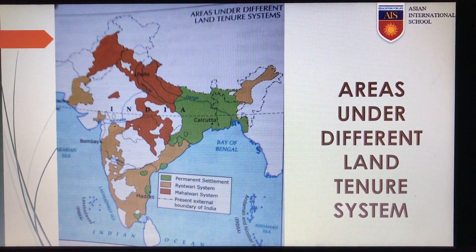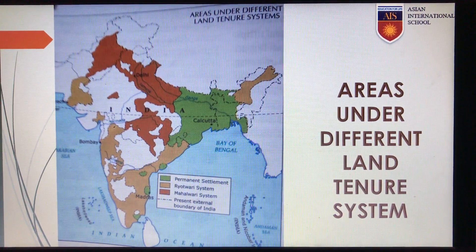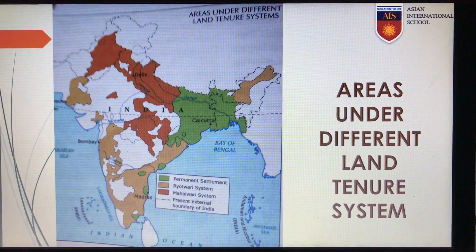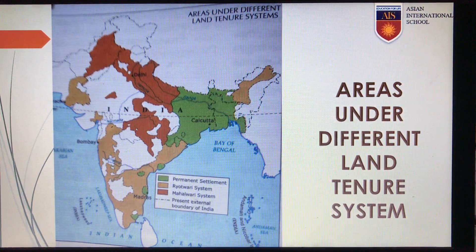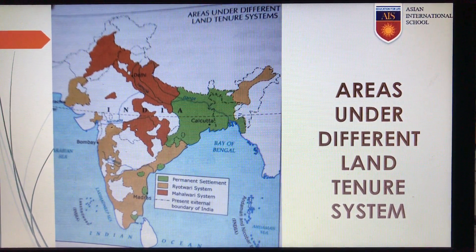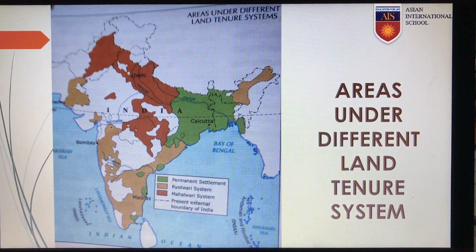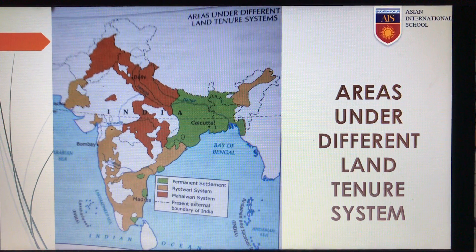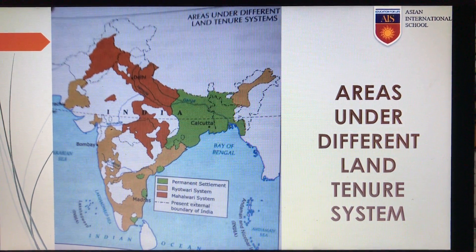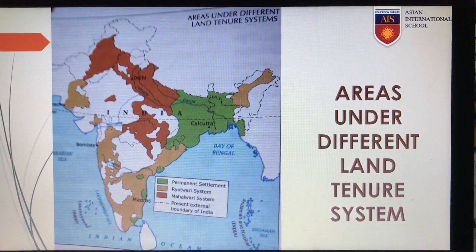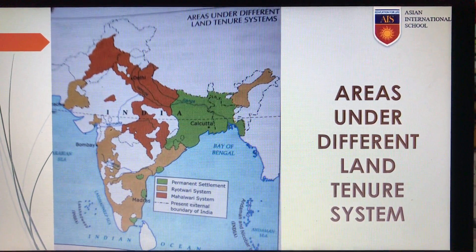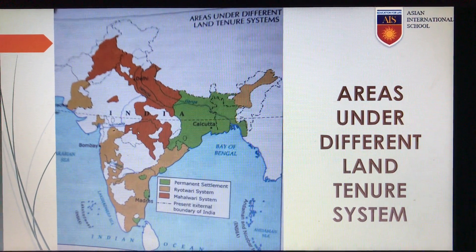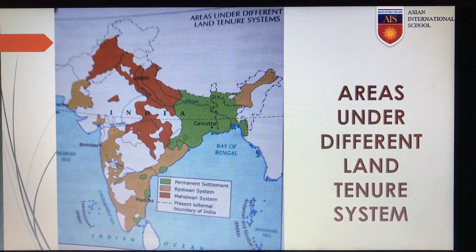This map shows the consolidated areas under different land revenue systems. The green area shows the Permanent Settlement, the yellow shaded area shows the Ryotwari system, and in the northwestern part of India the red color shows the Mahalwari system.